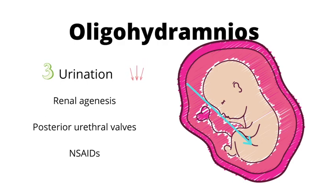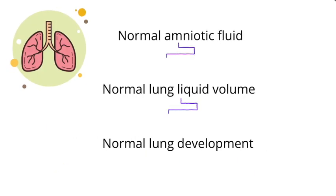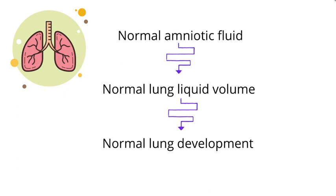Overall, oligohydramnios is caused by placental insufficiency and any state that causes decreased urination. An extremely high-yield association with oligohydramnios is pulmonary hypoplasia. A normal amount of amniotic fluid allows a normal amount to enter the lungs, creating a normal volume of liquid in the lungs, which causes adequate expansion and leads to normal lung development.